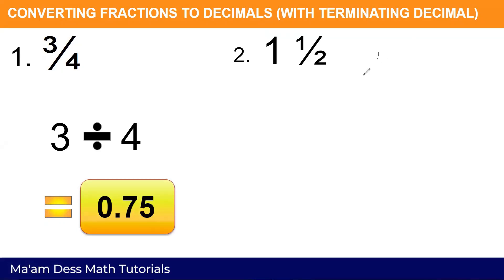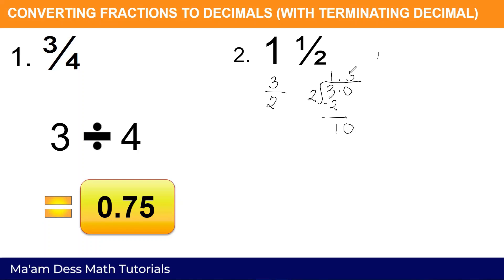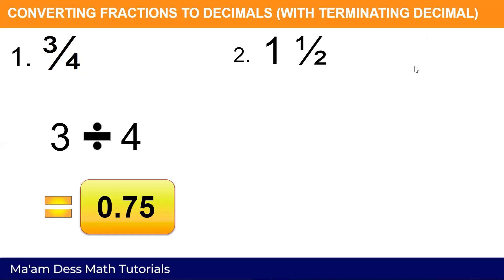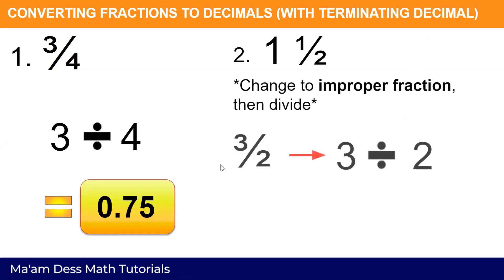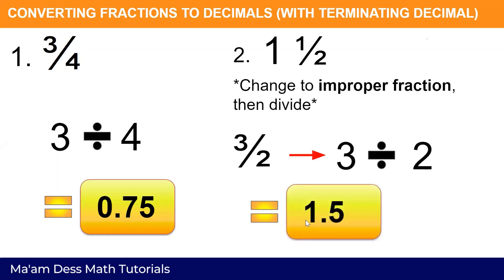Our next example is one and one half. First, change one and one half into an improper fraction: two times one is two, plus one is three — so we have three over two. To change this into decimals, divide three by two. Three divided by two is one; one times two is two; three minus two is one. Write the decimal point and bring down zero to get ten. Ten divided by two is five; five times two is ten; remainder zero. Therefore, three over two equals 1.5, or one and five tenths.